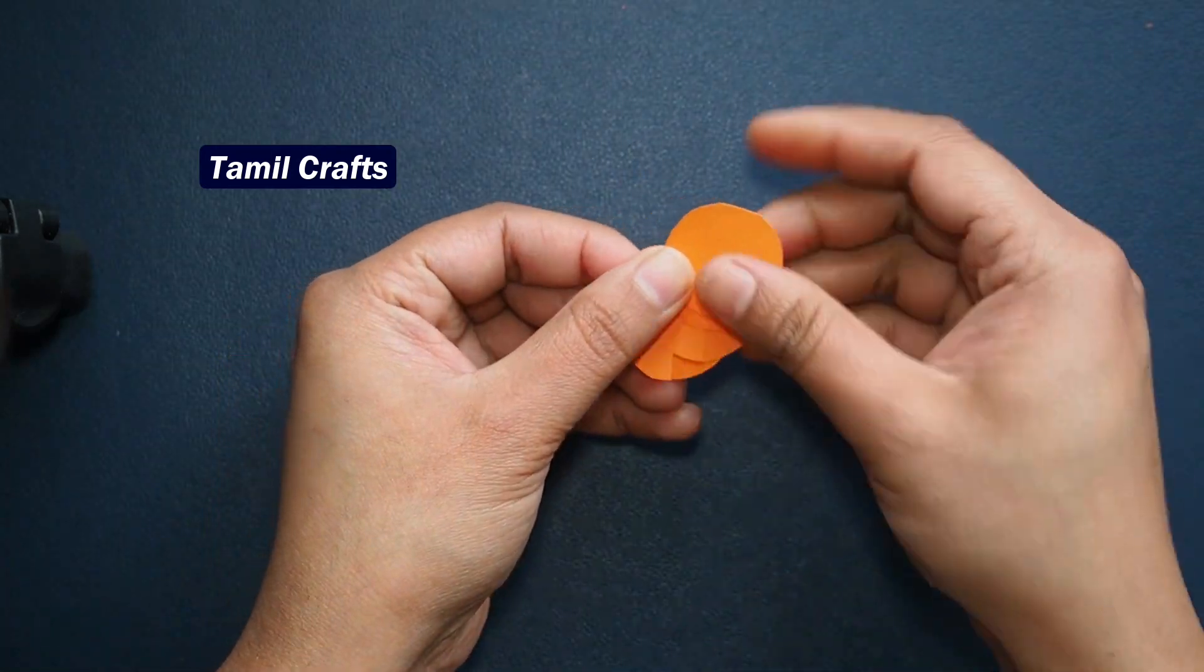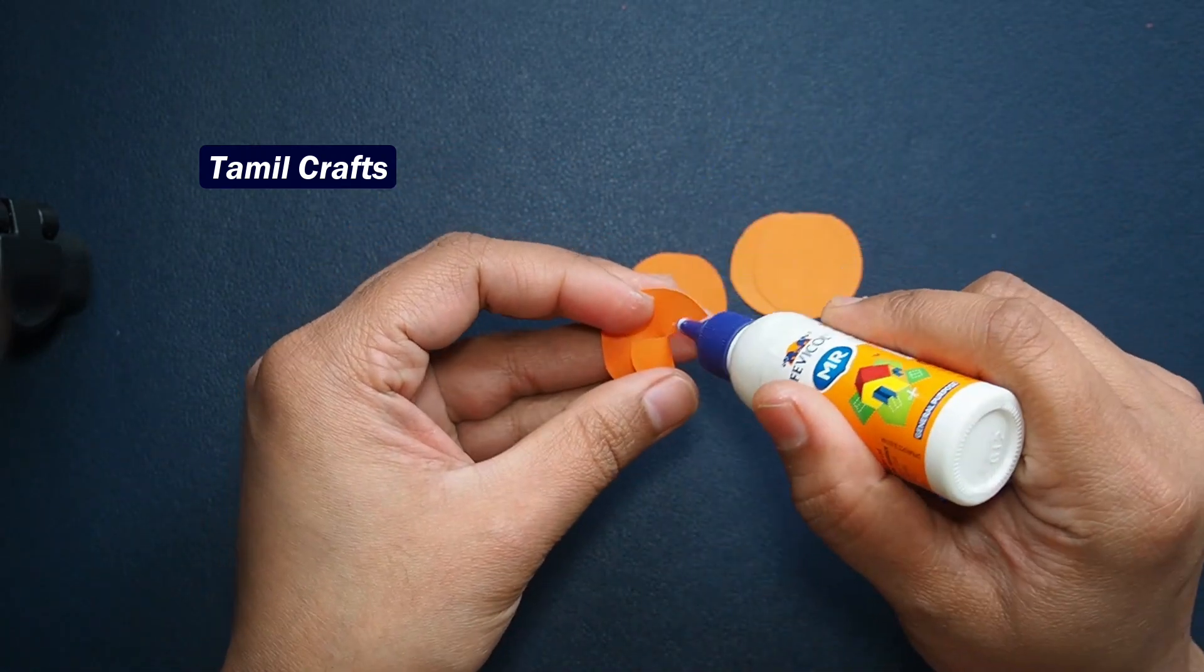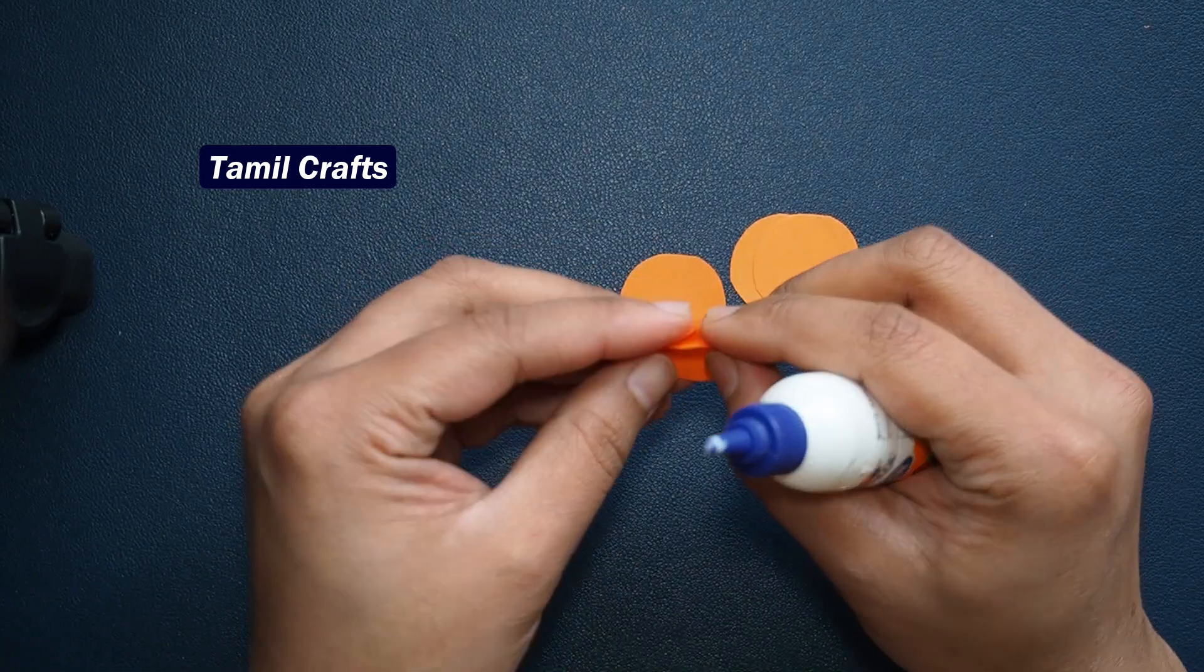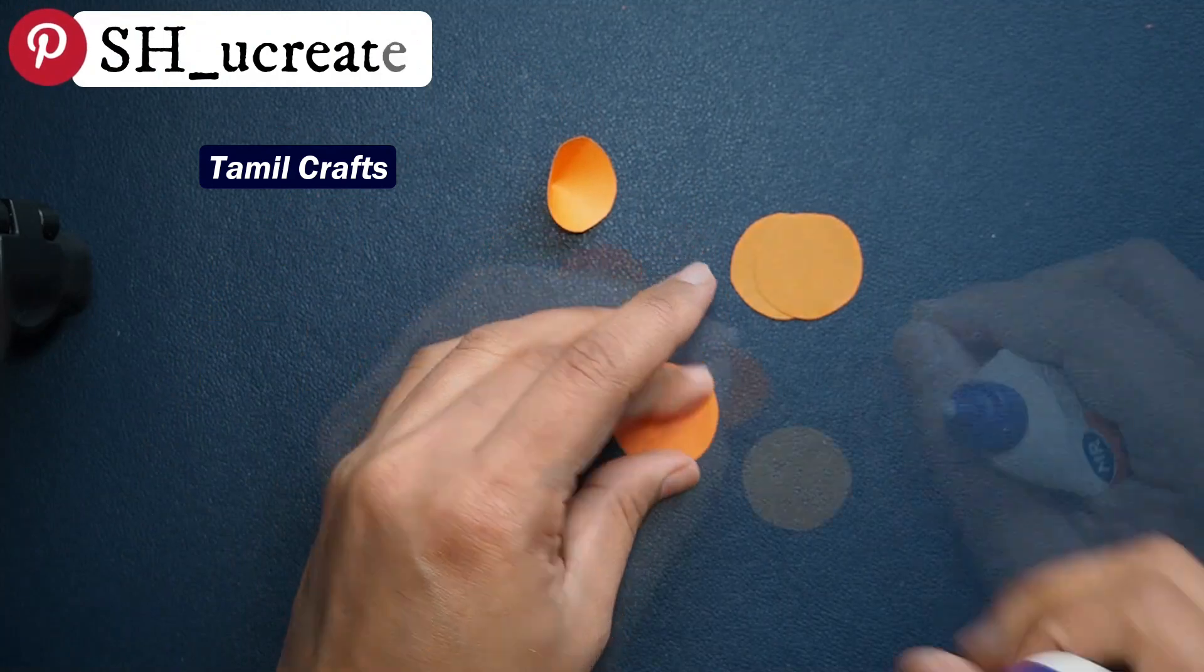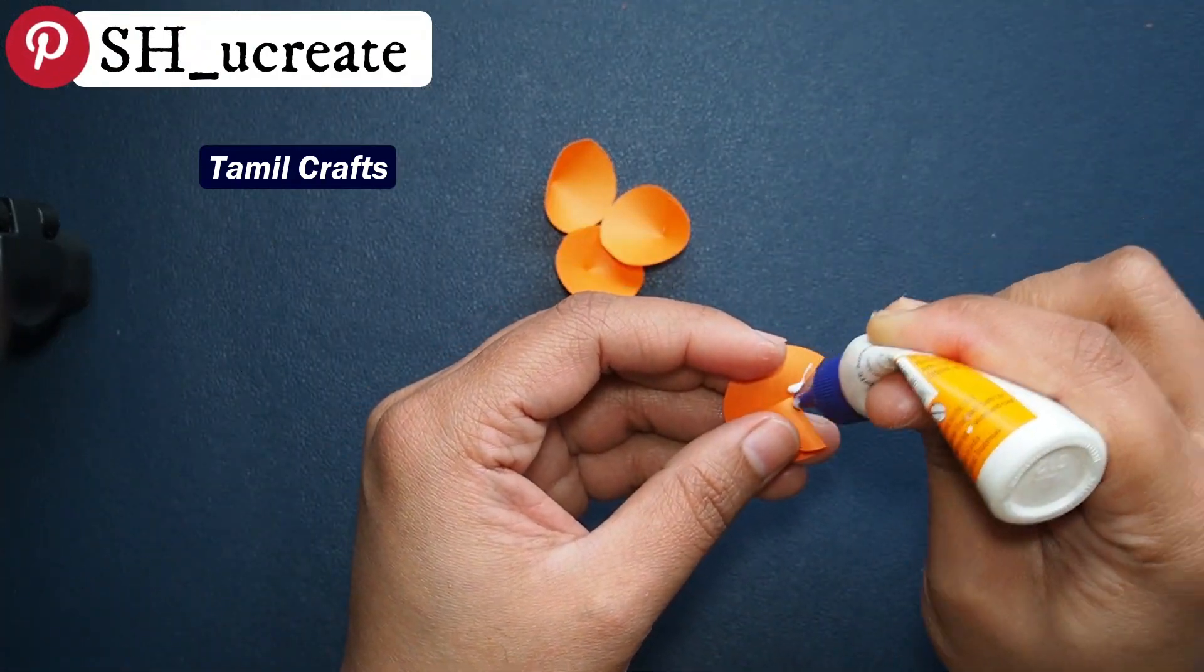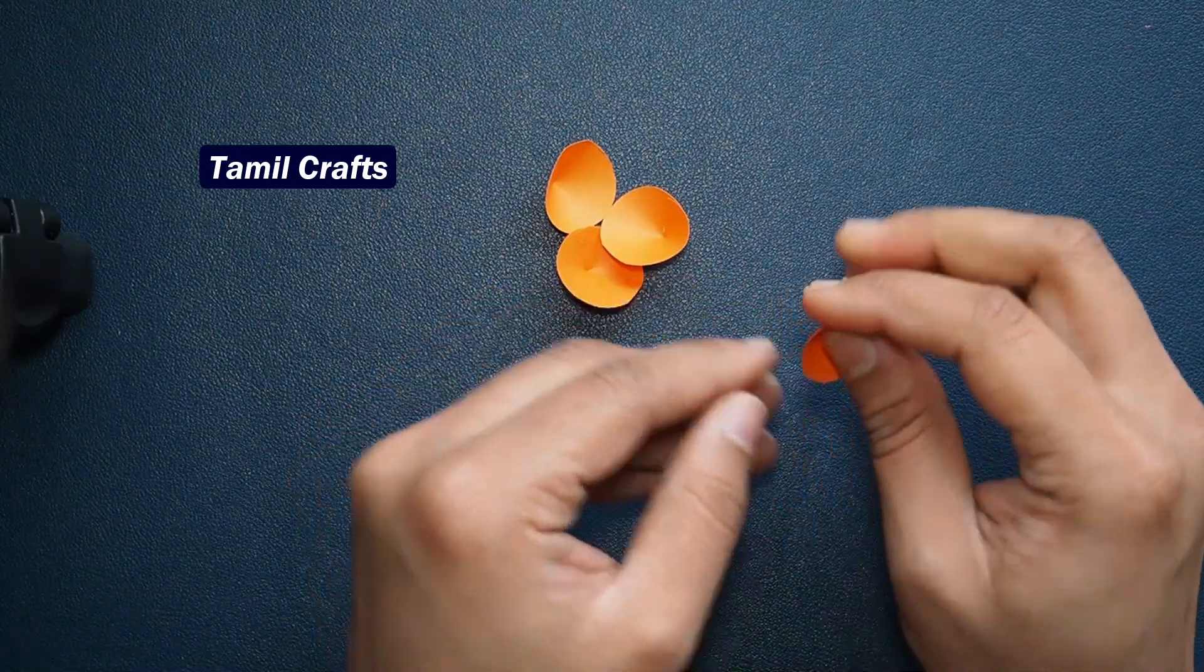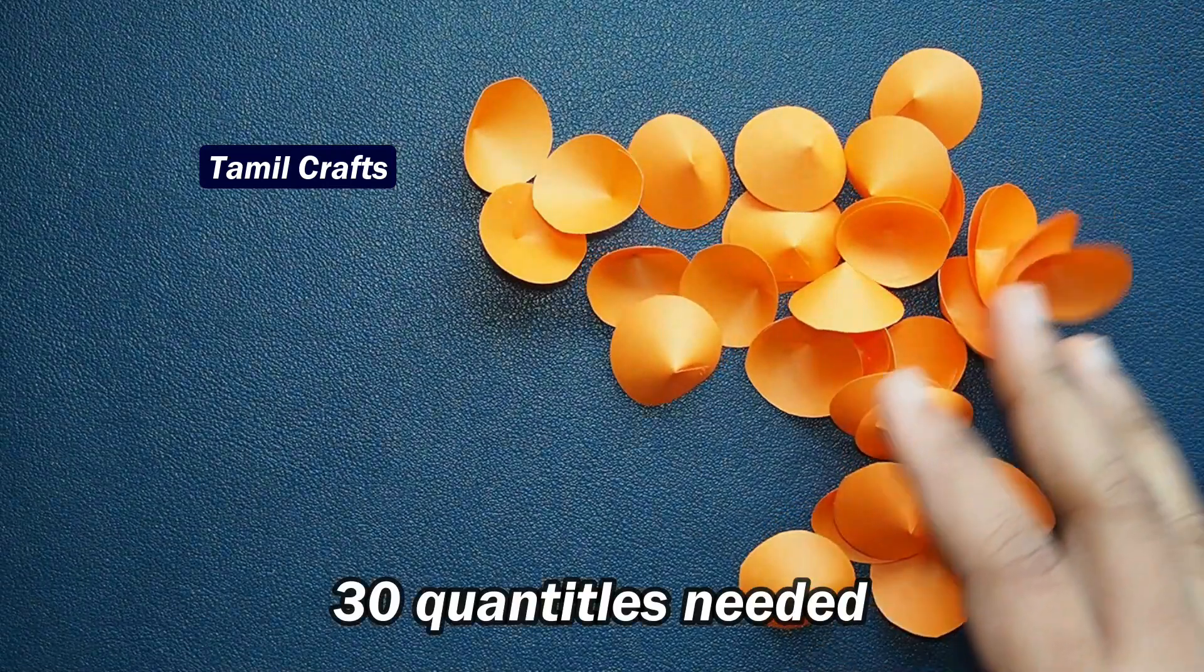Apply some glue on the center and fold them together. Glue them all in the center to form the petals.